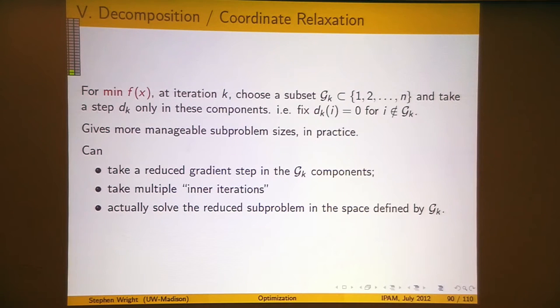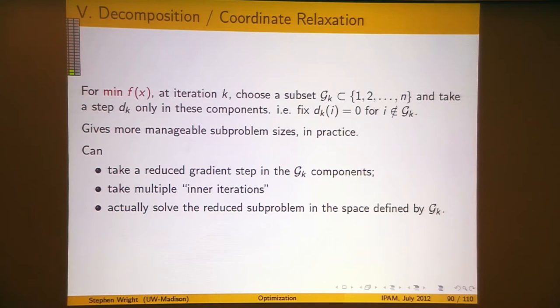The idea here is very simple. We're going to go back to the canonical unconstrained minimization problem, and instead of trying to take a step in all the components of x at once, at each iteration I'm just going to pick some subset of the components of x and focus on them — just take a step in some subset of the components.